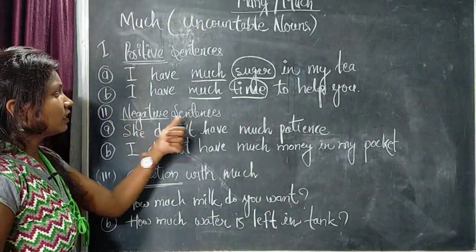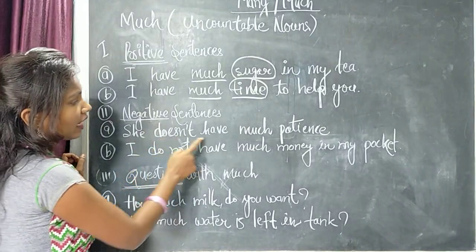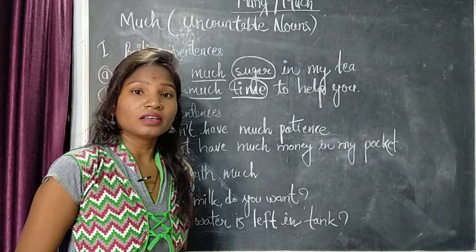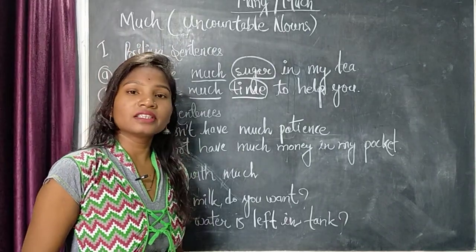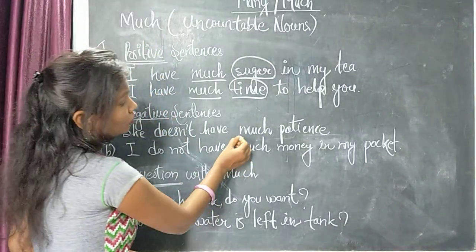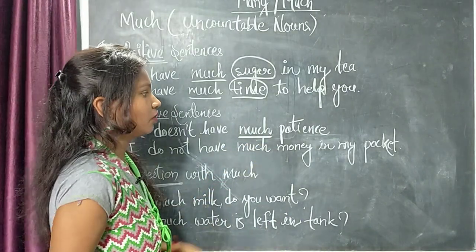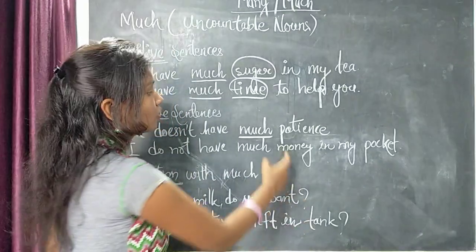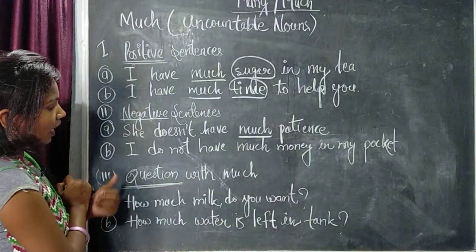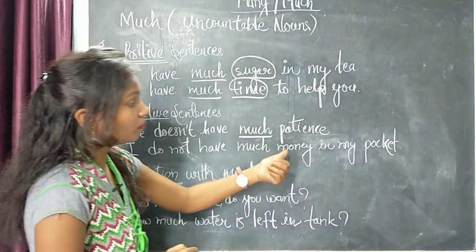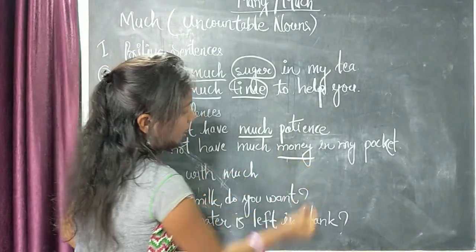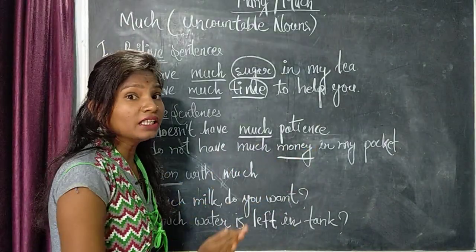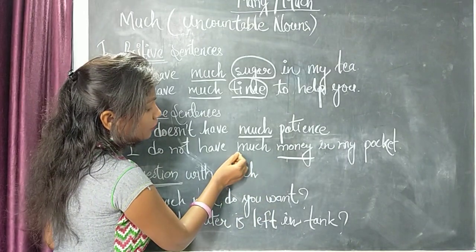Now negative sentences. 'She doesn't have much patience.' Patience means dhairya — we cannot count it, so patience is an uncountable noun, and patience does not have S or ES. That's why we use much. Second example: 'I do not have much money in my pockets.' Money is also an uncountable noun — money does not have S or ES written with it. That's why we use much.